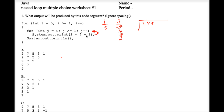We loop back up, j minus minus. Two times j minus one is now three. We loop back up, j minus minus. One is greater than or equal to one, so two times one minus one simplifies to one, so one prints. We loop back up, j minus minus — zero is not greater than or equal to one.